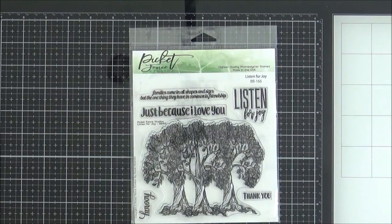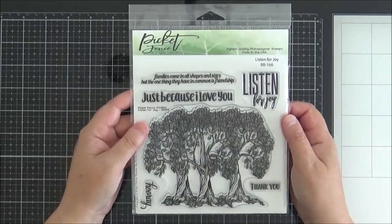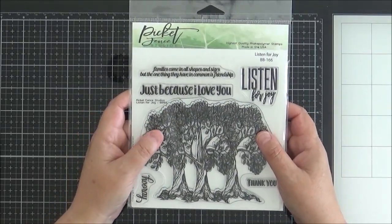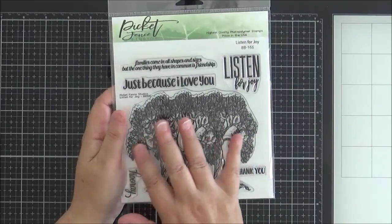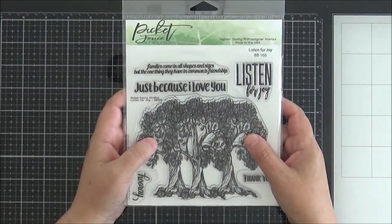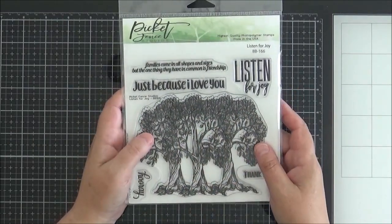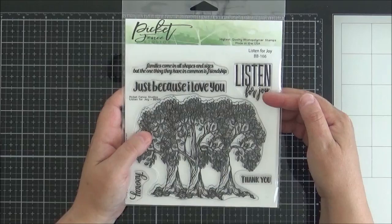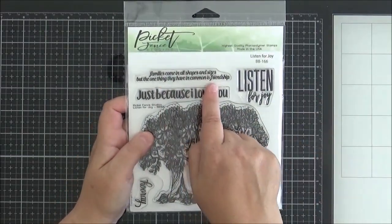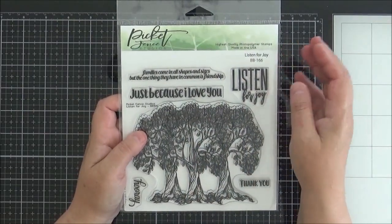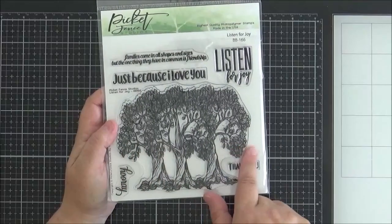And keeping with the forest theme, you've got this set here called Listen for Joy. This is lovely. I love a tree stamp, love a tree die as well. But this is a really good stamp for an A2 card. You can even make a five by seven card with this as well. I think that would look great. You've got Listen for Joy, just because I love you. A thank you, a hooray. Families come in all shapes and sizes, but the one thing they have in common is friendship. So that's a really nice sentiment.